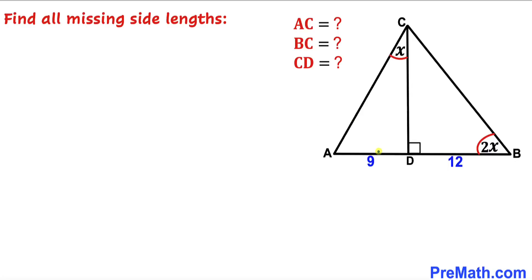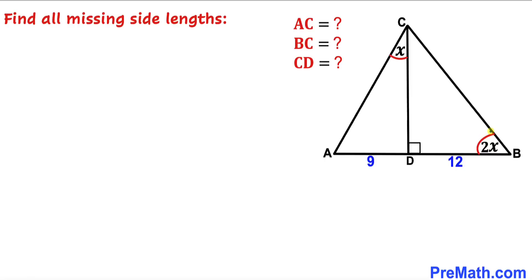Welcome to pre-math. In this video we have got triangle ABC such that CD is the altitude, side length AD is 9 units, side length BD is 12 units, angle DBC is 2x, and angle ACD is x. We are going to calculate the length AC, side length BC, and length CD.